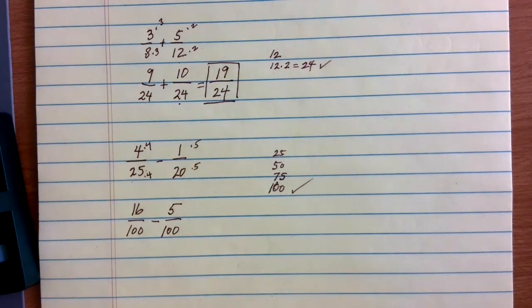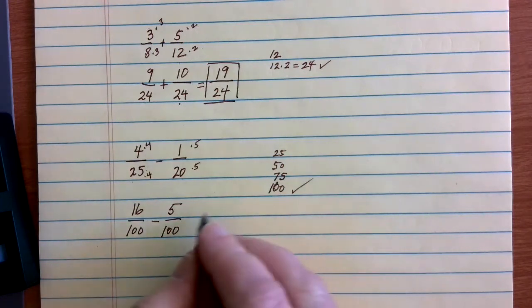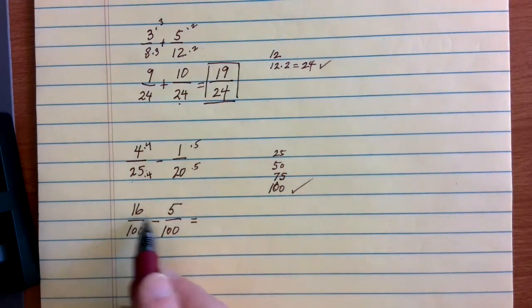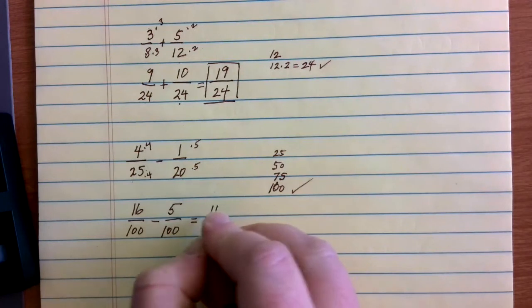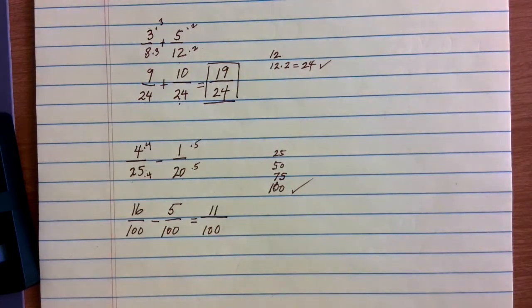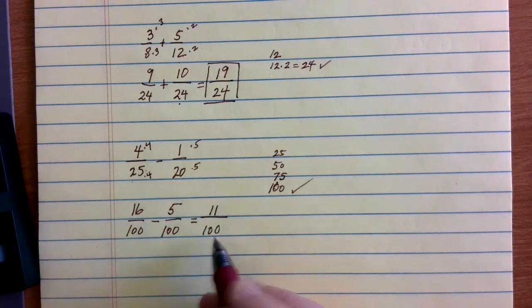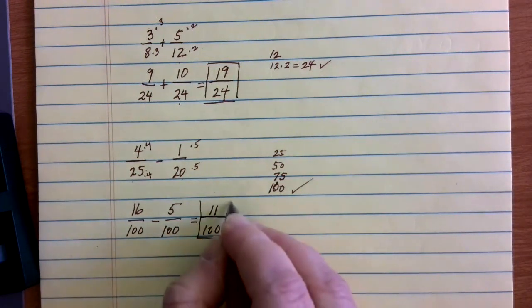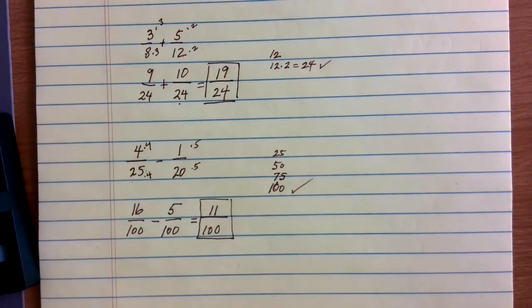Now that the denominators are the same, I can go ahead and do my subtraction. 16 minus 5 gives me 11 on the top. And then, because I'm adding and subtracting fractions, I keep that denominator the same. My final solution is 11/100. 11 is prime and doesn't go into 100 at all, so that's my final and most simplified answer.